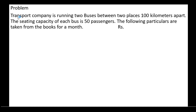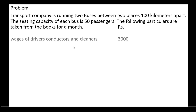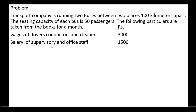This is the problem. A transport company is running two buses between two places 100 kilometers apart. The seating capacity of each bus is 50 passengers. The following particulars are taken from the books for a month. Wages of drivers, conductors and cleaners: Rs. 3000. Salary of supervisory and office staff: Rs. 1500.